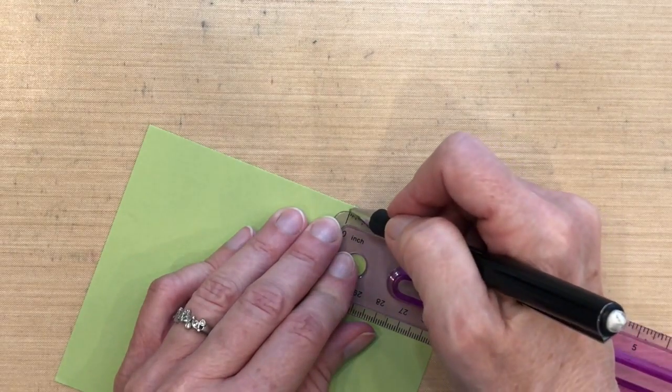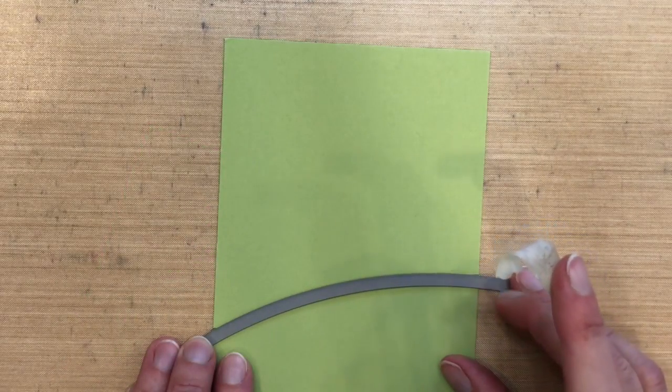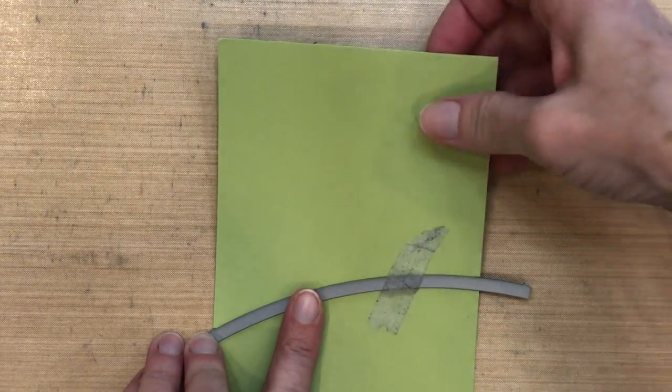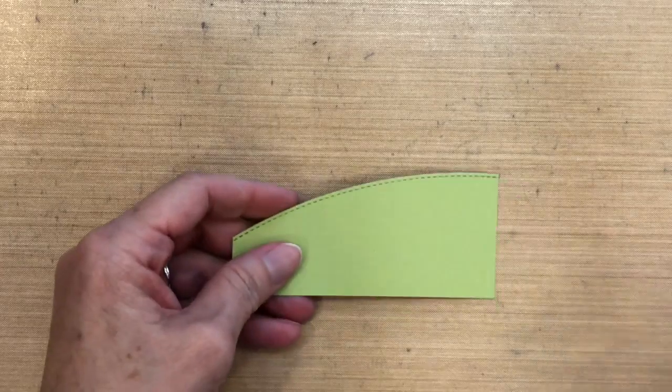So for the green one, I'm cutting this at one inch on the left, two inches on the right. So I'm just making sure that those two pencil marks meet on my die.